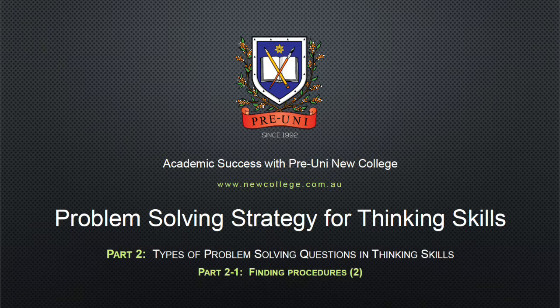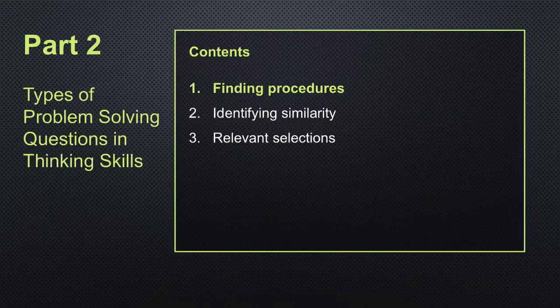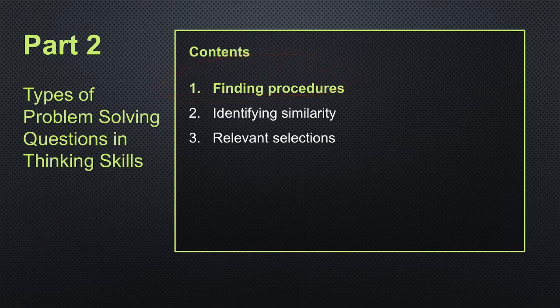Welcome everyone to part two — the second lesson of problem solving strategy for thinking skills. In this part we will be going through different types of problem solving questions that you may encounter, and learning some tips to solve them. There are three types of problem solving questions in thinking skills: finding procedures, identifying similarity, and relevant selections. We will be covering finding procedures in this lesson.